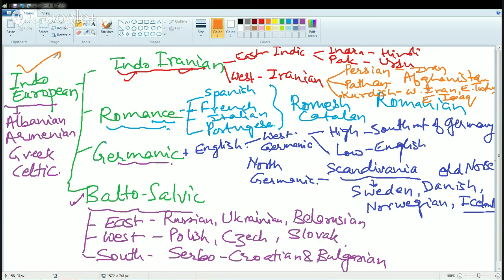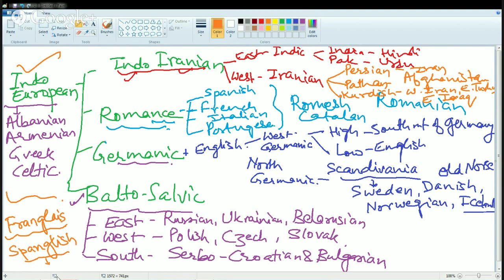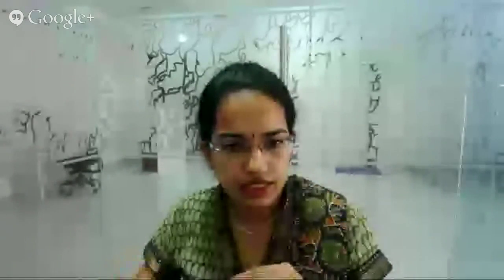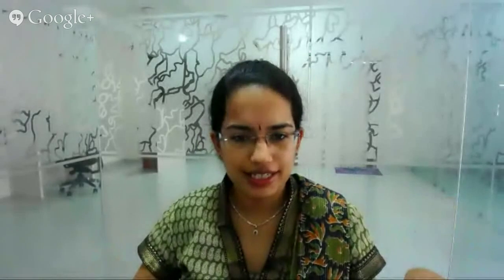The English language has diffused into two mixed forms: Franglais, a combination of French and English, and Spanglish, a combination of Spanish and English. For example, 'short pants' in English became 'shorts' in Spanish, and 'vacuum cleaner' also crossed over. In this session we have talked about language, the types of language, the major prominent languages of the world, and the basic classifications of language. In the next session we will be talking about religion and ethnicity.